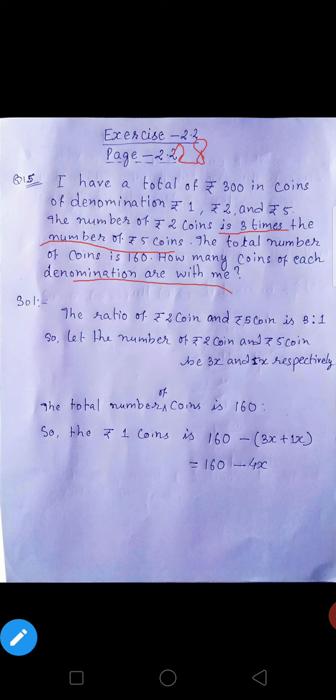I have a total of rupees 300. Suppose this is 1 rupee coin, this is 2 rupees coin, and suppose this is 5 rupees coin. The number of 2 rupee coins is 3 times the number of 5 rupee coins, this is 2, 2 rupees coins is 3 times the 5.